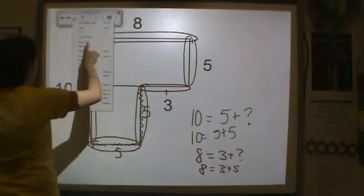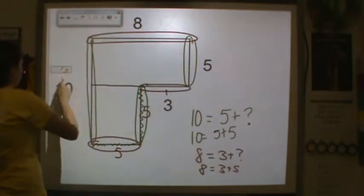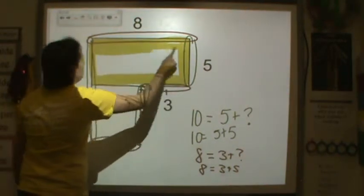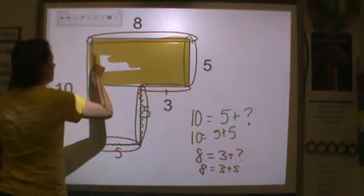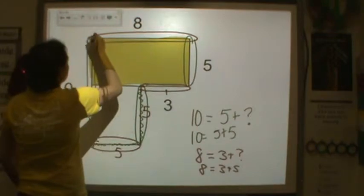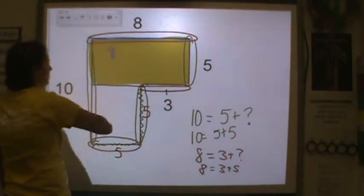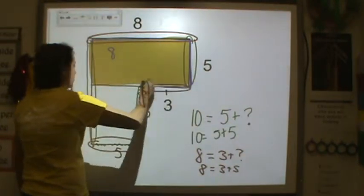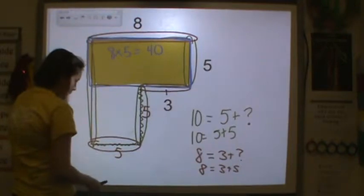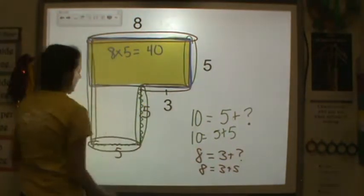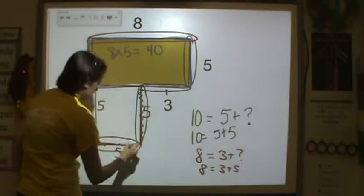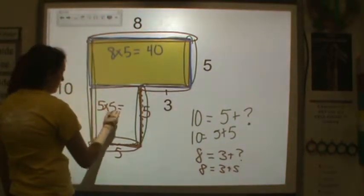The next step was to shade one of the sides. I'm going to shade this top rectangle. The length of this rectangle is 8 and the width is 5, so 8 times 5 is equal to 40. Now I need to find the length and the width of the unshaded part. The length here is 5 and the width is 5, so 5 times 5 is equal to 25.